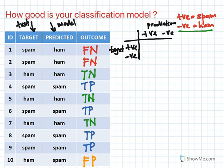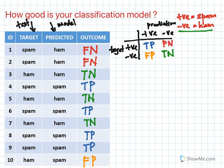We build a matrix with positive and negative on both axes. The top-left cell is true positive, the bottom-right is true negative, the top-right is false positive, and the bottom-left is false negative. Now let's build the confusion matrix for our example table, where positive is spam and negative is ham.